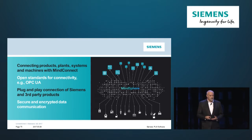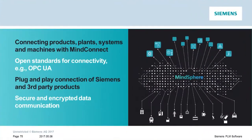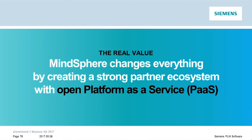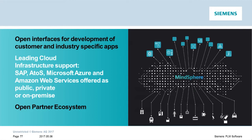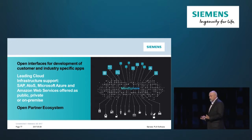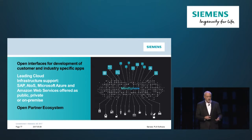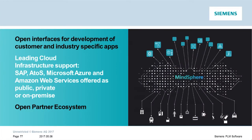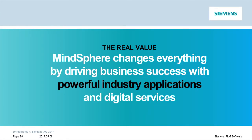That plug-and-play connection of both Siemens and third-party products through OPC UA is very important to us. When you're talking about the Internet of Things, all of that has to be done in a very secure environment because you are connecting systems to the Internet. The second thing we'll talk about is how MindSphere changes everything by creating a strong partner system through open platform-as-a-service. At the platform-as-a-service level, we move up into northbound APIs — application programming interfaces that allow people to build powerful industry applications running on top of MindSphere. MindSphere supports all major cloud infrastructures including SAP, Microsoft Azure, and Amazon Web Services, through an open partner ecosystem.